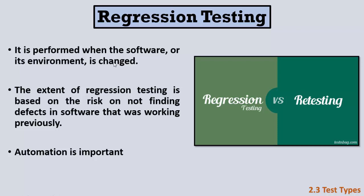Regression testing is performed when the software or its environment changes — not only when the software itself changes. If a platform used by the software is updated, regression testing must be performed to ensure no new bugs are introduced. Automation is very important in regression testing because it's not possible to do everything manually, and we must prioritize based on the risk of not finding defects in old modules.